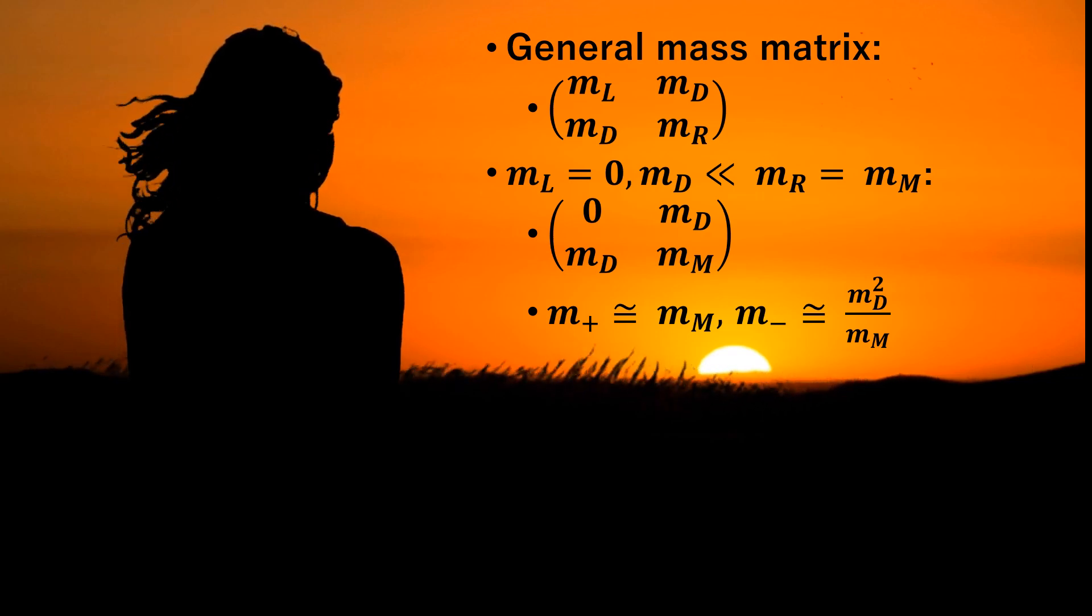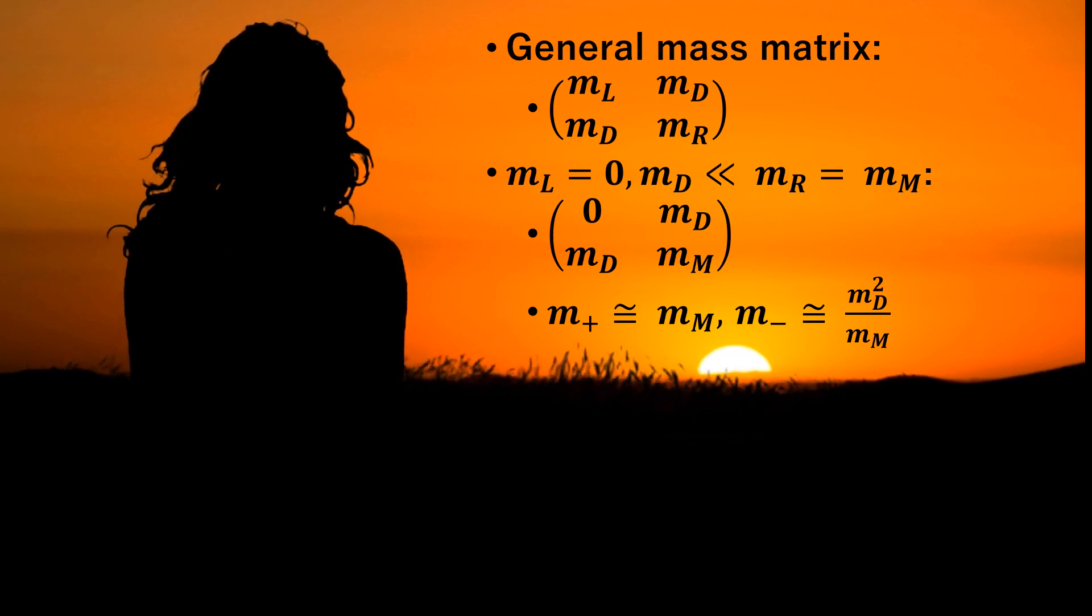It has two eigenvalues. The geometric mean of the two eigenvalues is equal to MD because the determinant is equal to the square of MD.